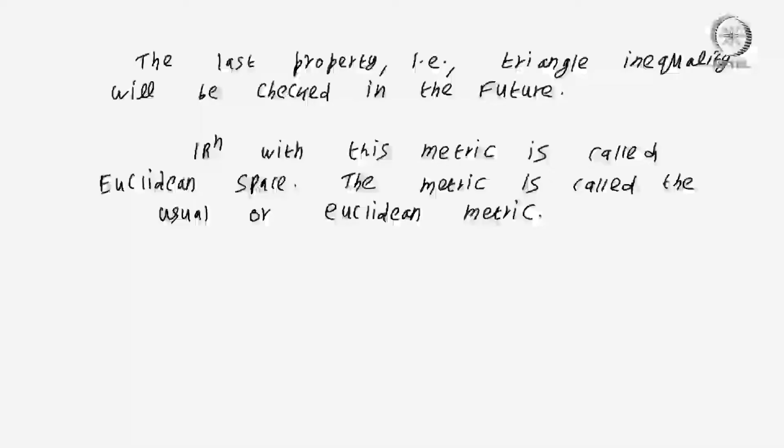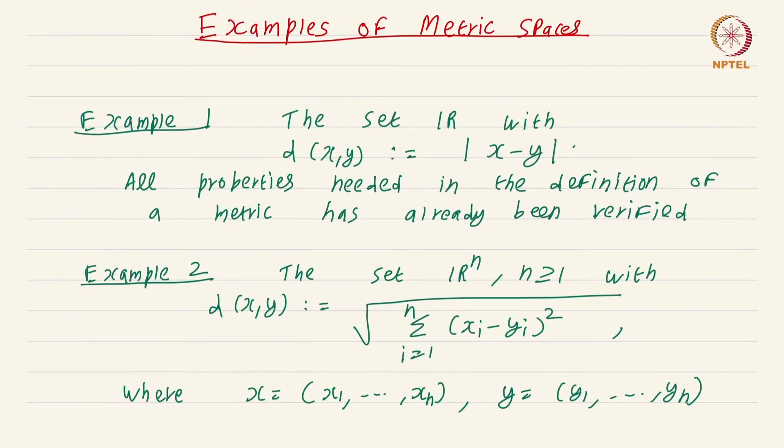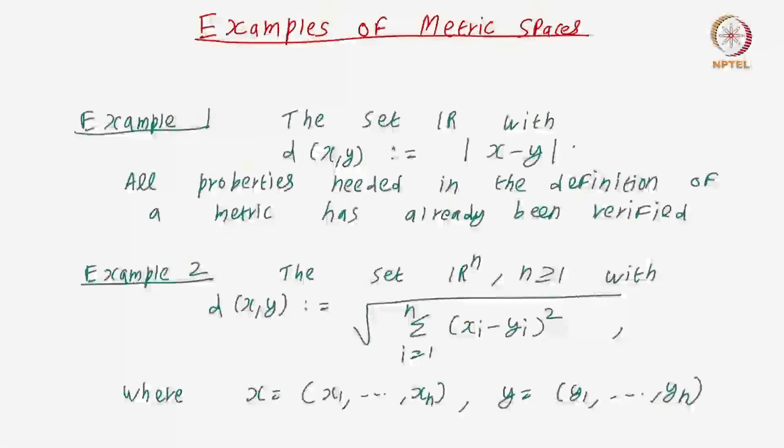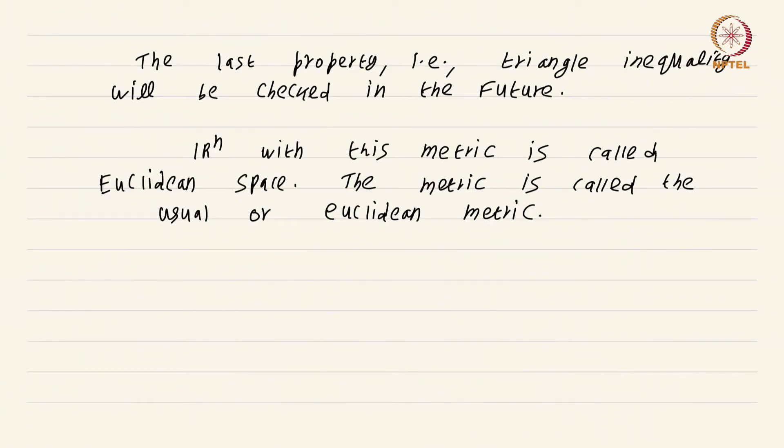Now, I had remarked that this definition d(x,y) = √(Σ(x_i - y_i)²) is the distance between x and y, the usual distance. Can you figure out why this is the case? At least can you figure this out in R² and R³? Please do that as an exercise. It is a very very useful exercise and it will ground this theory in something concrete. Now, let us move on with more examples.